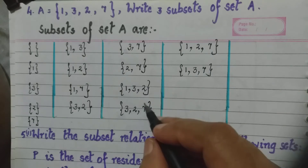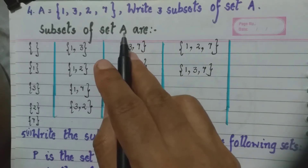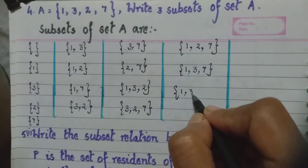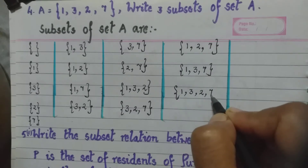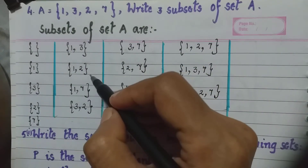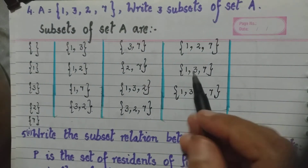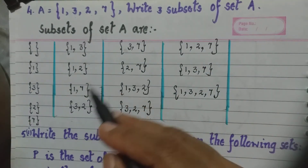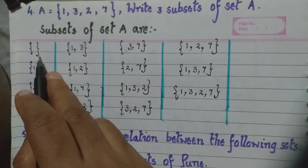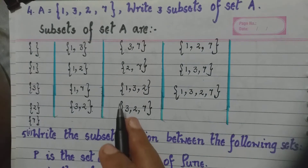The last case: a set is a subset of itself, which we had said was one of the properties of subsets. So we can also write the same set as it is: {1, 3, 2, 7}. So how many subsets have we got? 1, 2, 3, 4, 5, 6, 7, 8, 9, 10, 11, 12, 13, 14, 15 and 16 — we have got 16 subsets, although they asked us only 3. I have just shown you how we can write different subsets of set A. The empty set and the set equal to A also form subsets of set A.